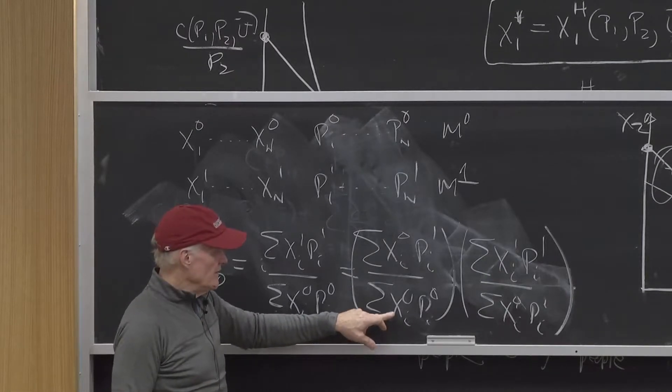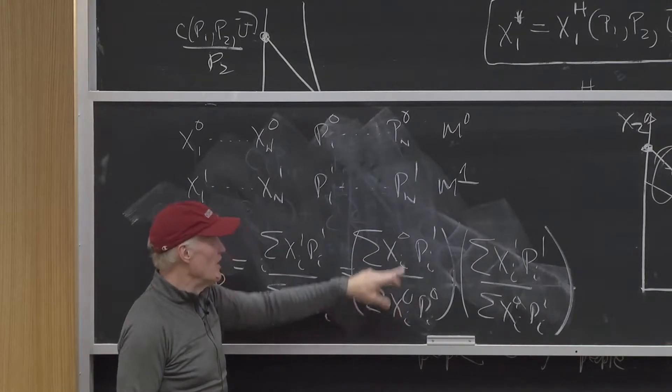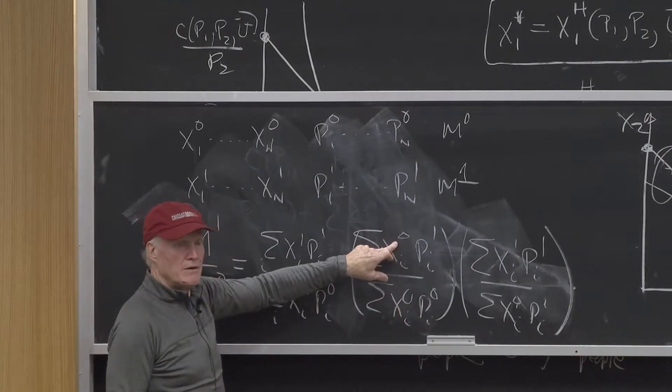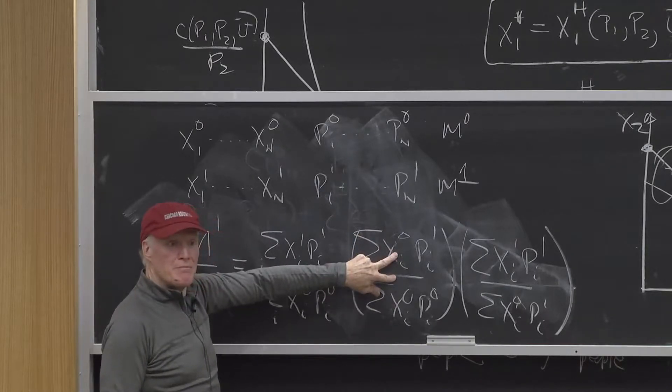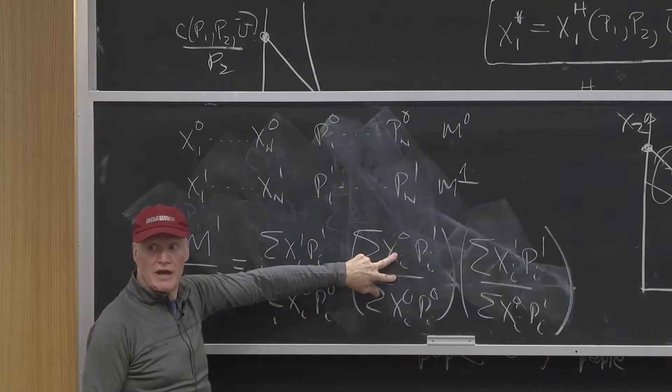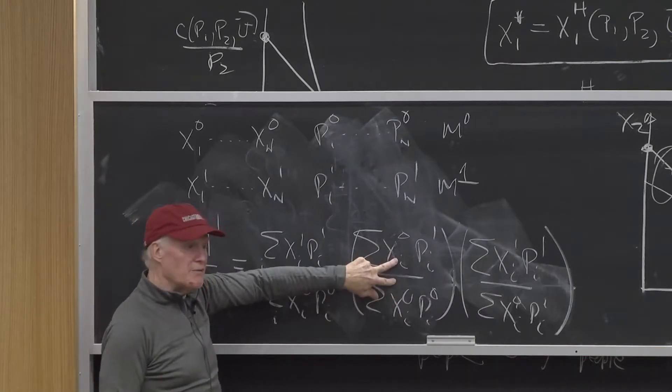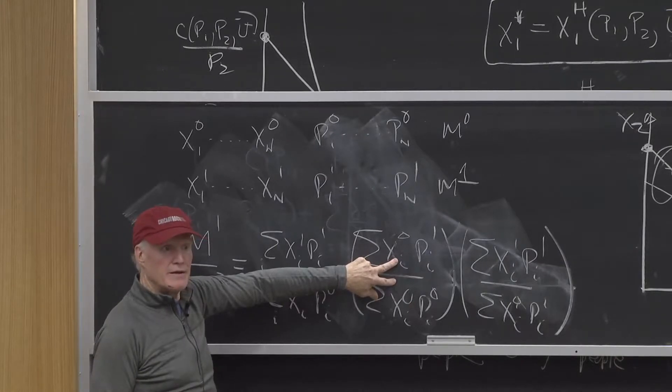It's a price index that takes my period 0 bundle and asks, how much would it cost to buy it now? And we say, if this number is bigger than that number, we say prices went up. I can't afford for the same dollars to buy what I bought yesterday. And if this went down, I would say, I can more than afford to buy what I bought yesterday today. Any questions that people have?